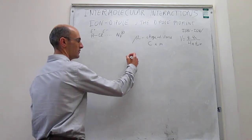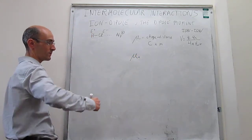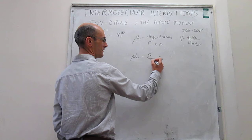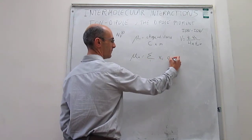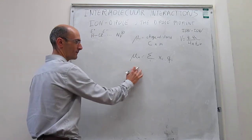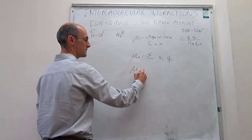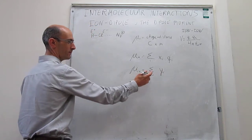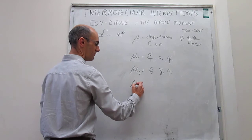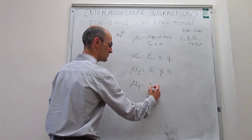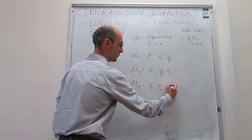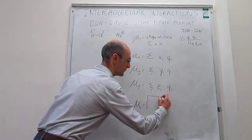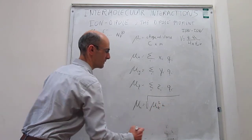You can calculate the dipole moment vector in the x-direction by summing the products of each atom's x-coordinate multiplied by its partial charge. You repeat this for every axis — so μy is the sum of each atom's y-coordinate multiplied by its charge, and μz is the z-coordinate multiplied by the charge. You then get the dipole moment component in each direction.